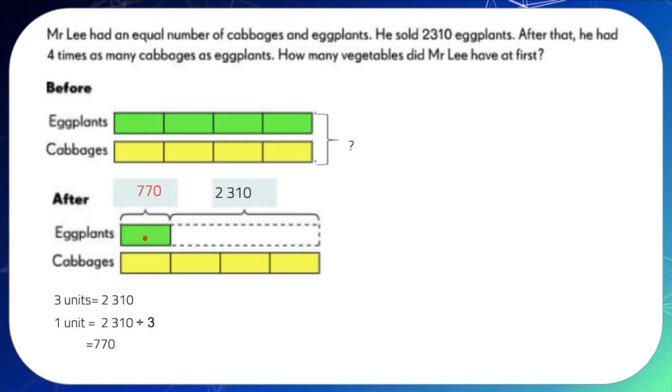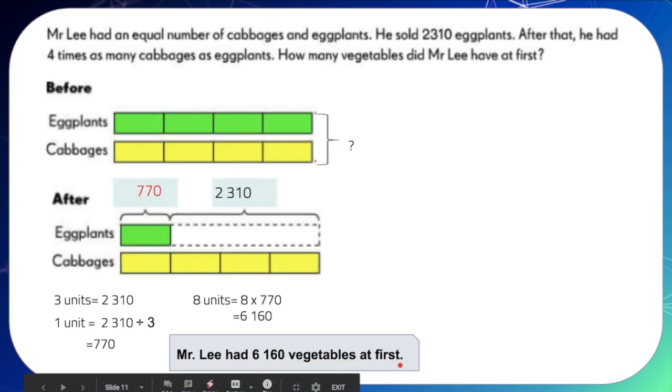And now, we are ready to answer the question. We have to find out the number of vegetables Mr. Lee had at first. And here, we have four units for eggplants. So, eight times 770. The final answer is 6,160 vegetables. So, Mr. Lee had this number of vegetables at first.